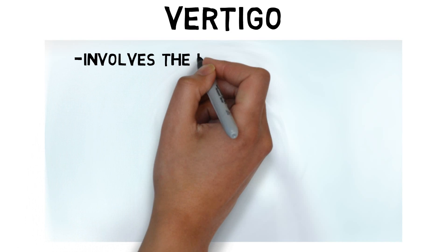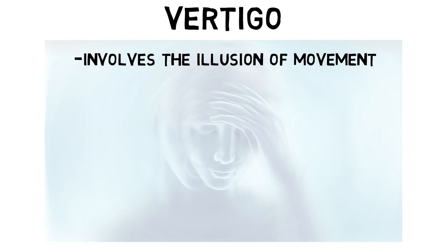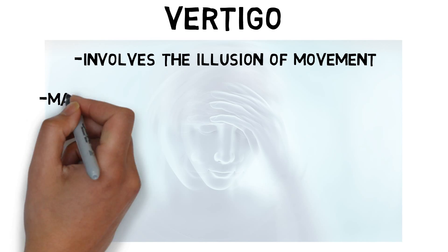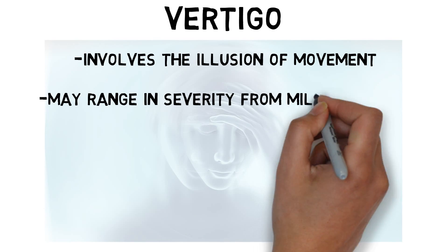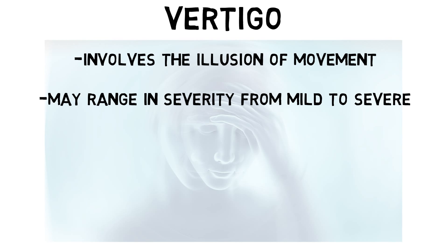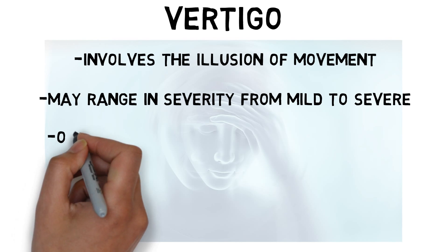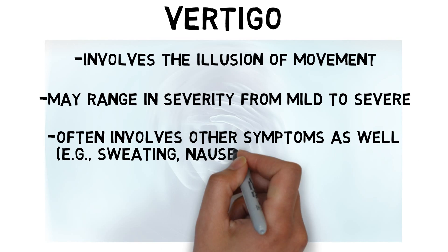Vertigo involves the illusion of movement, where someone either feels like they or the environment around them is moving, usually in a spinning manner. Vertigo may range in severity from mild to so severe that it's difficult to maintain one's balance, and it frequently involves other symptoms as well, including sweating, nausea, and vomiting.